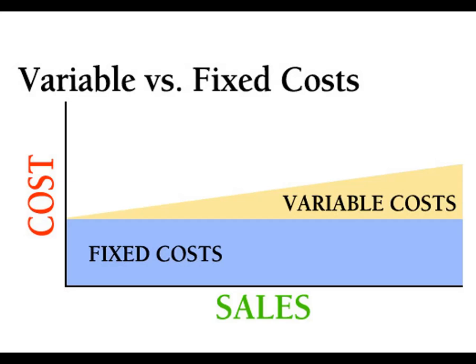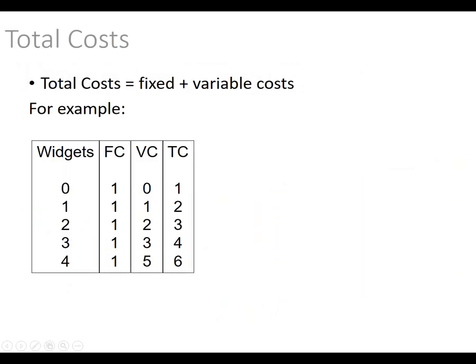Here's a nice chart: cost is on the Y-axis and number of units produced on the X-axis. Notice fixed costs do not change based on how much you produce. Variable costs increase as production increases. Total cost is simply fixed costs plus variable costs.